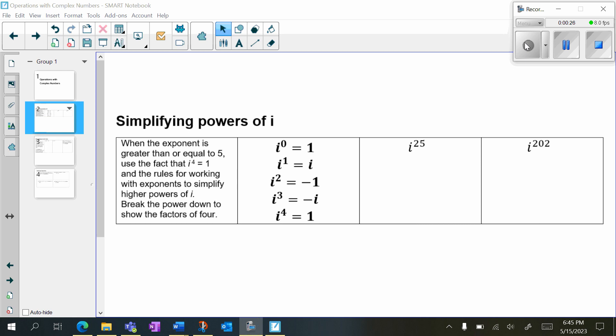So i to the 0 is equal to 1, i to the 1st is equal to i, i squared is equal to negative 1, i to the 3rd is equal to negative i, and i to the 4th is equal to 1. And every 4th power of i, the pattern repeats itself. So you just need to memorize those.